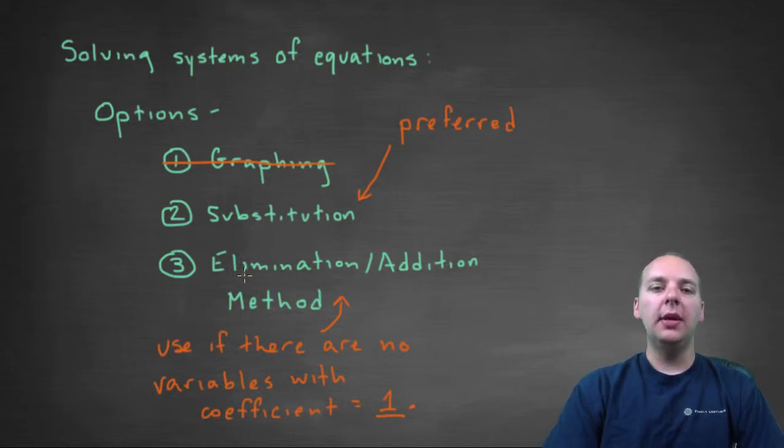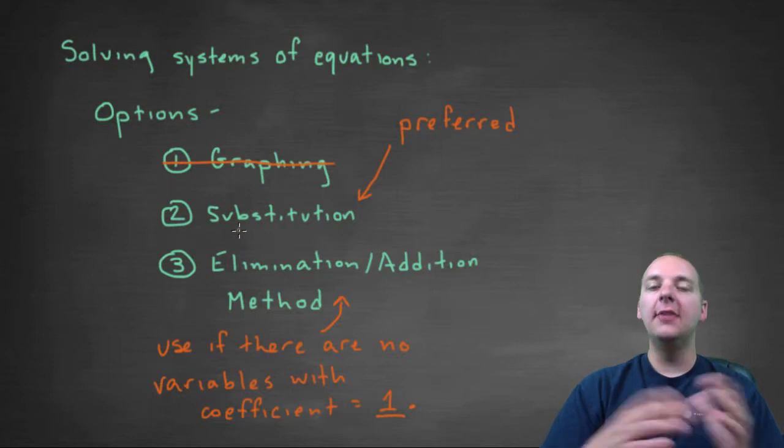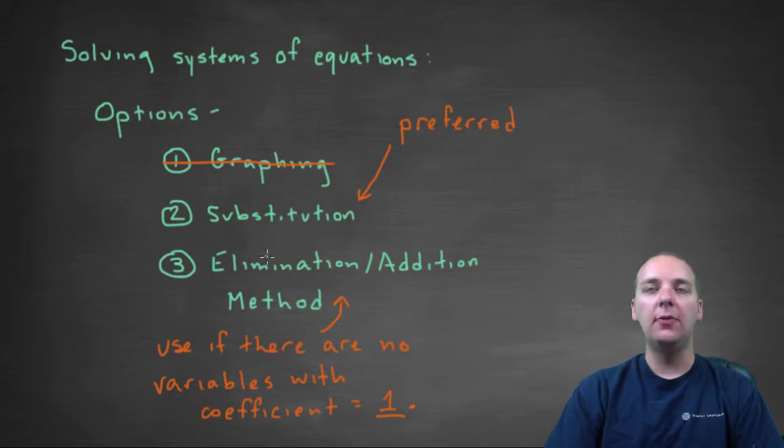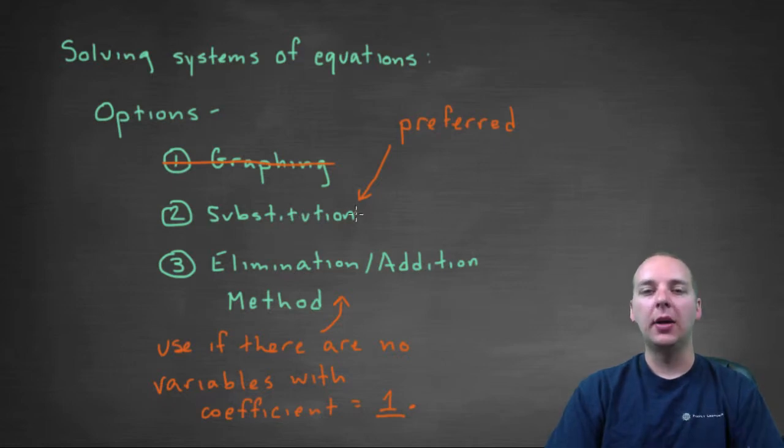If you get into a situation where none of the variables have a coefficient of one, which means it's not easy to solve for an x or a y to substitute into another equation, then we would go to the elimination method or the addition method. Now, that's just informally speaking to you. With that being said, you can often use either of these. If you were just dead and determined to use the substitution method, even if all your variables didn't have a coefficient of one, you could still make it work.